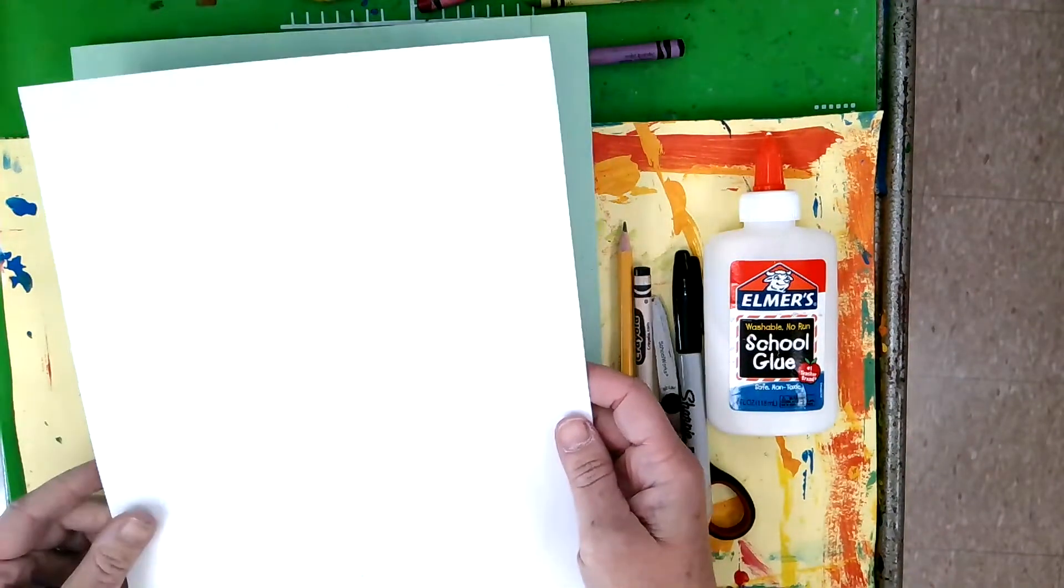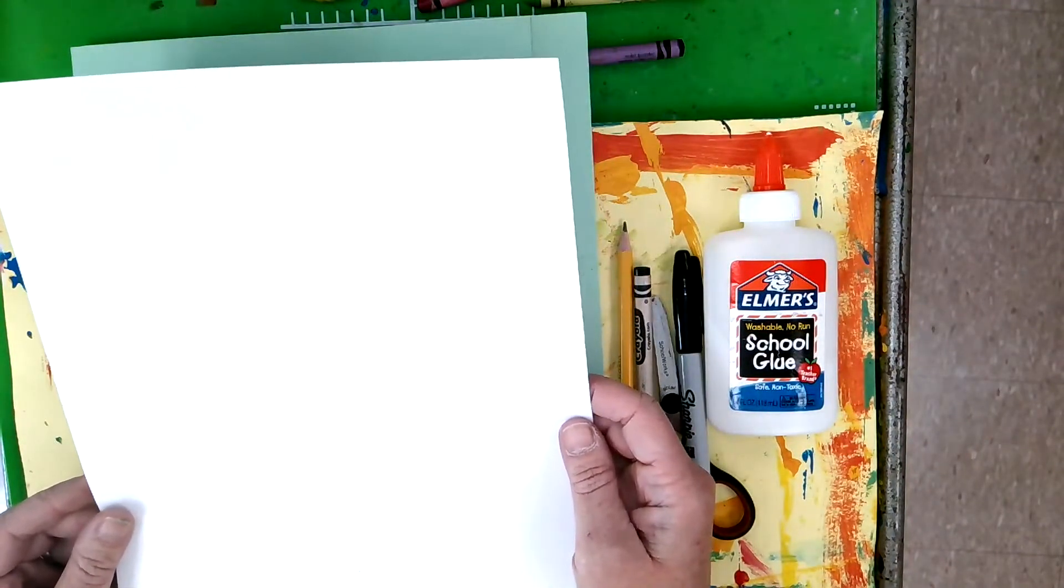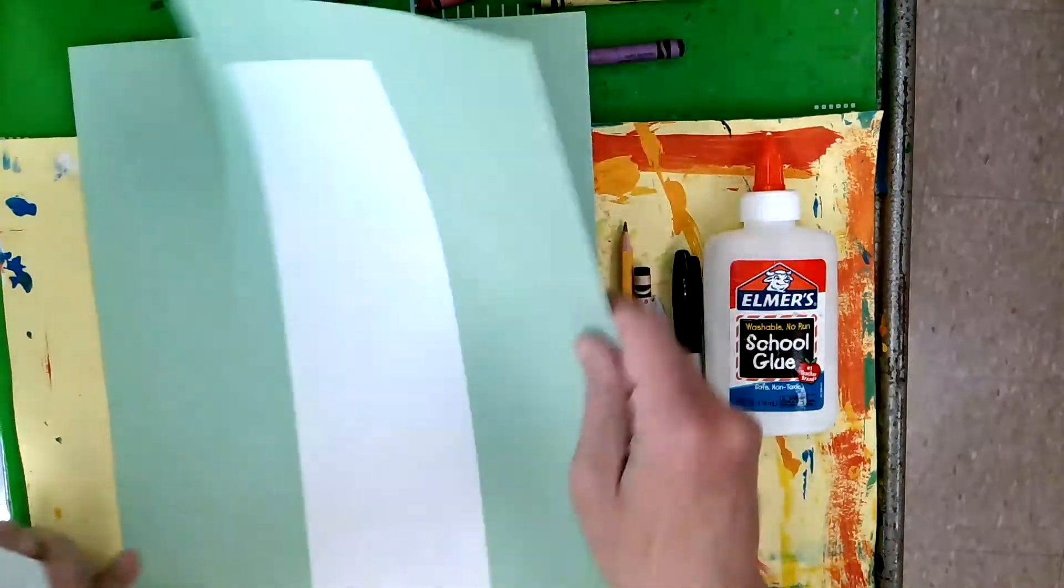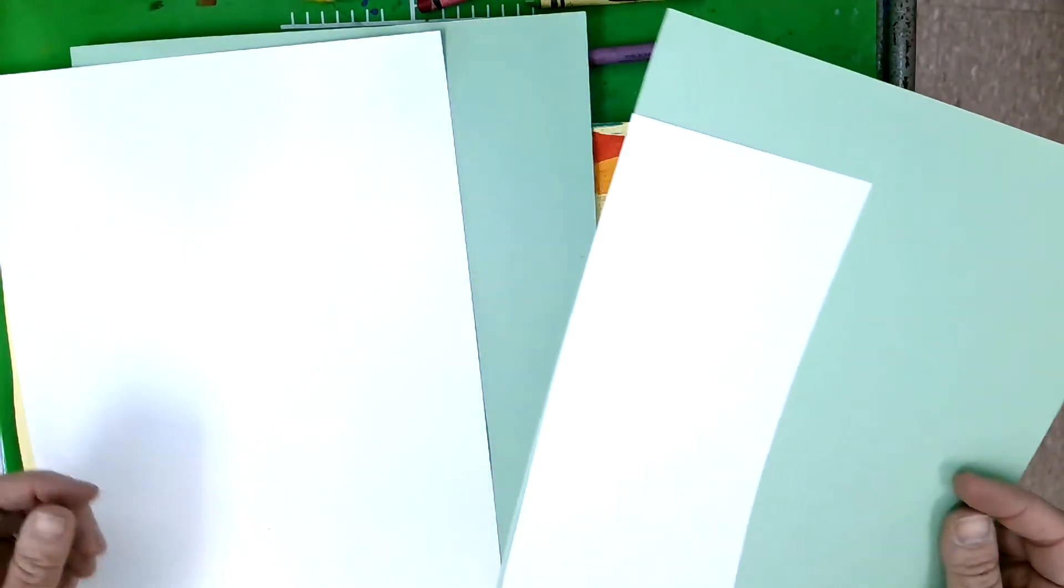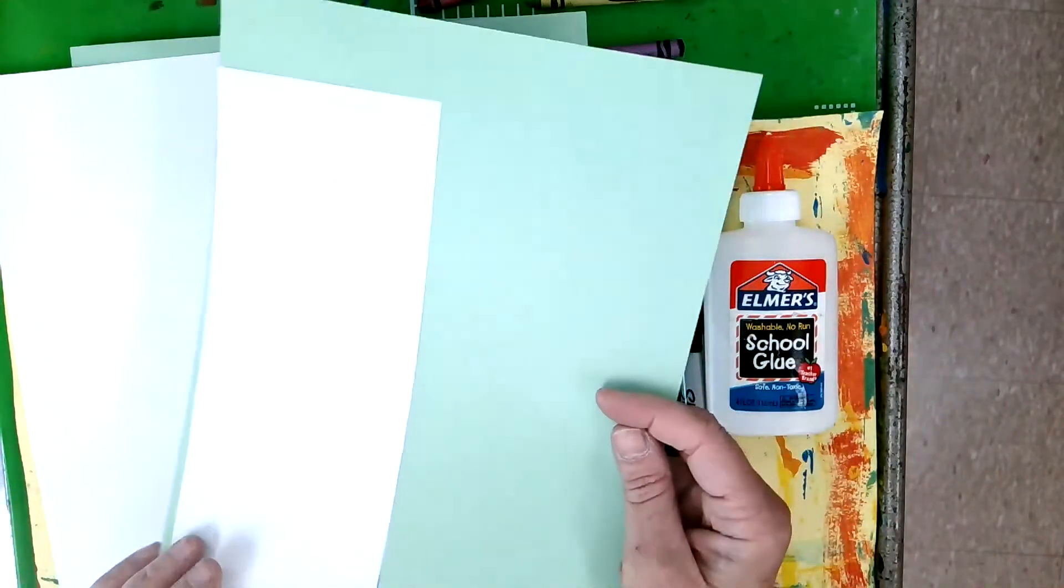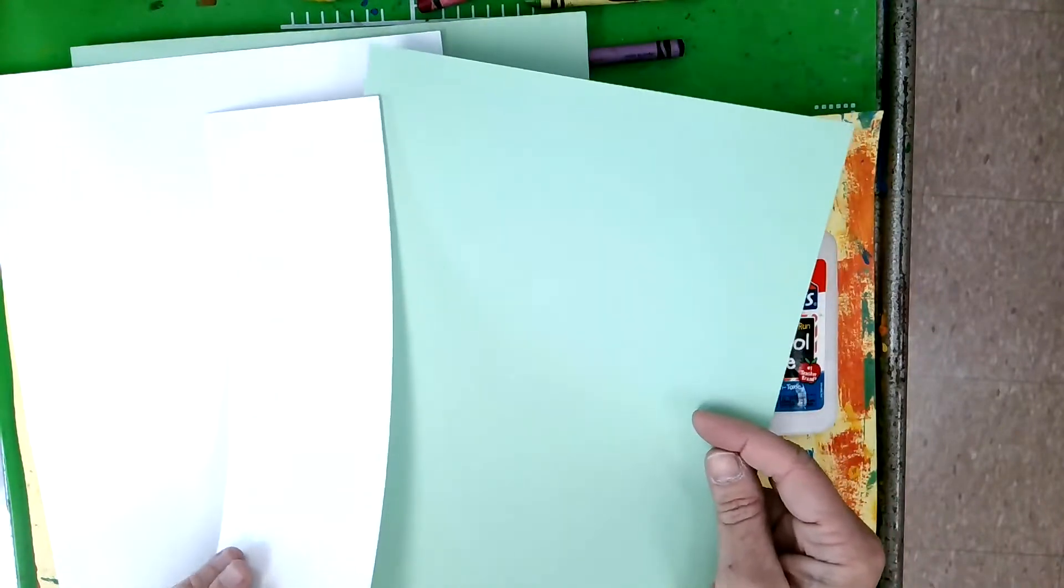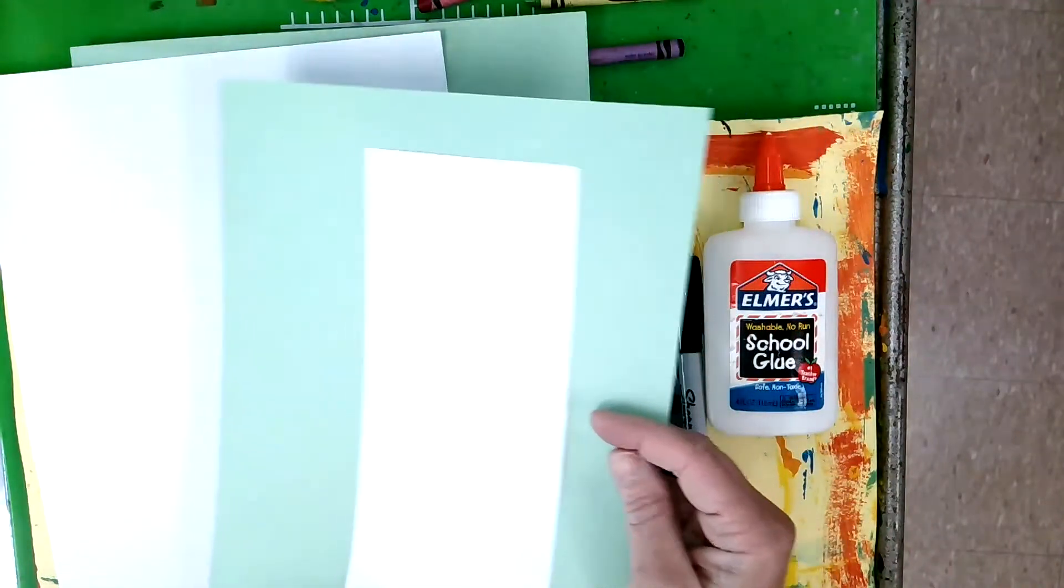We are going to need a piece of scrap paper to practice drawing our frog, some green construction paper. If you don't have any green construction paper, you can always draw your frog on a piece of white paper and then paint it or color it in green. You don't have to have the construction paper, but I have some so I'm going to use that for my final frog.